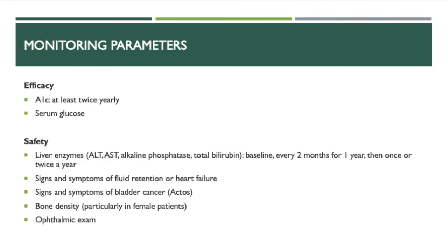For monitoring parameters, for efficacy, monitor A1C at least twice yearly and serum glucose levels. For safety, monitor liver enzymes including ALT, AST, and total bilirubin at baseline, every two months for one year, and then once or twice a year. Also monitor signs and symptoms of fluid retention or heart failure, signs and symptoms of bladder cancer if the patient is taking Actos, bone density particularly in female patients, and ophthalmic exams.